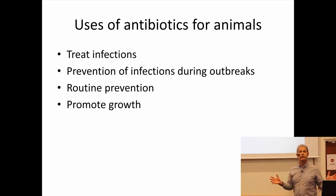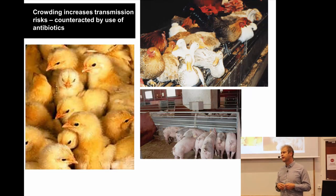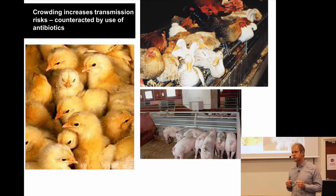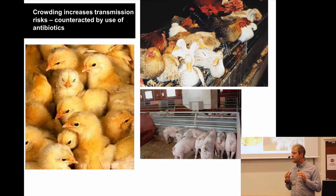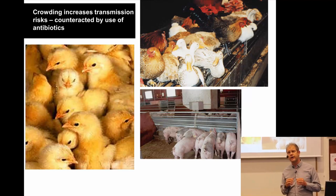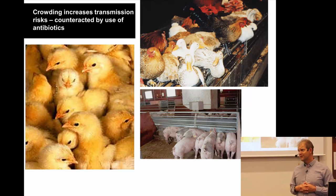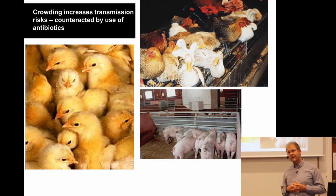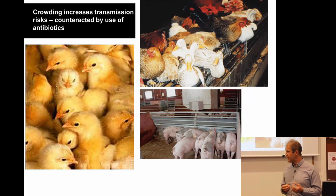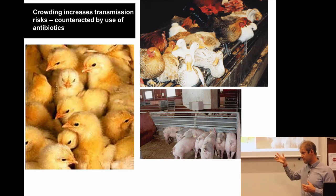This has been used worldwide for a long time to increase meat production. When you produce meat, you usually want to do that cost efficiently. One strategy is to put many animals together in a small space. But crowding increases risks for transmission of various infectious diseases. You can manage that with really good hygiene, or you can give them antibiotics. Antibiotics have for a long time been the simple and cheap way to manage transmission risks — not only to promote growth, but also to keep animals healthy.